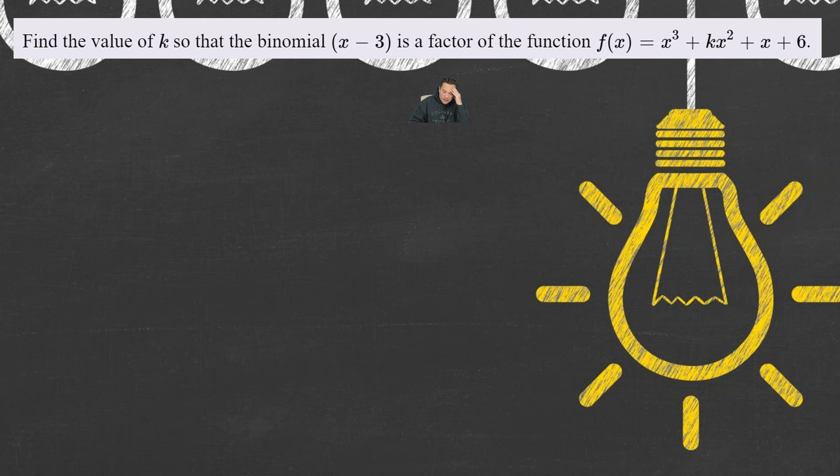It's a common kind of question. So, we're going to use synthetic division to answer the question. First of all, for this to be true, in other words, for x minus 3 to be a factor,